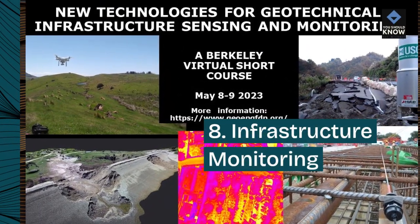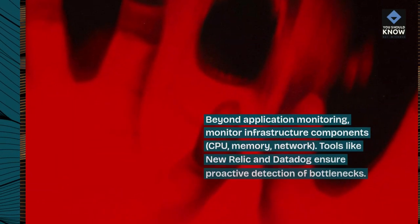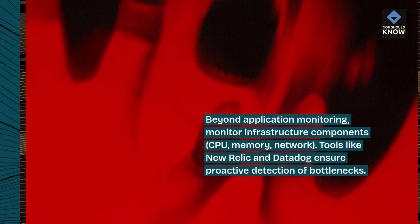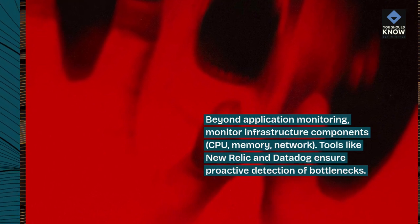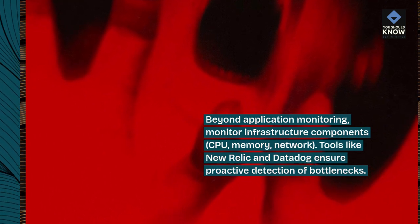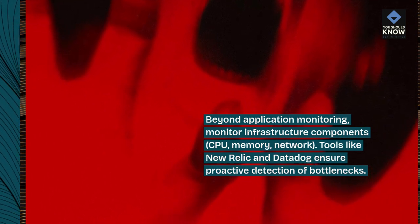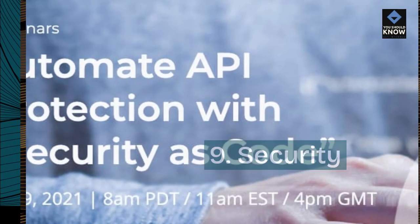8. Infrastructure Monitoring. Beyond application monitoring, monitor infrastructure components such as CPU, memory, and network. Tools like New Relic and Datadog ensure proactive detection of bottlenecks.